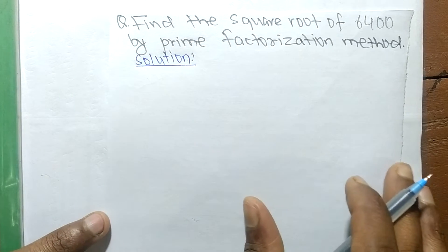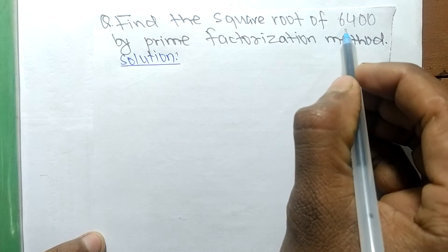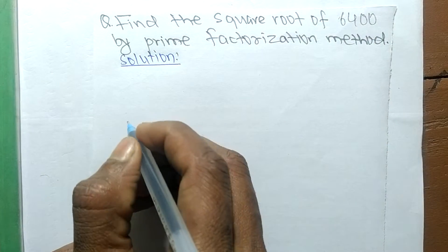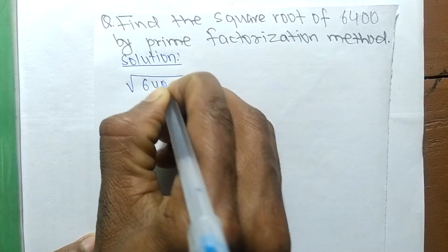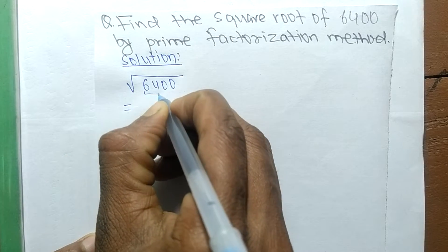Today in this video we shall learn to find the square root of 6400 by prime factorization method. To find the square root of 6400, first you have to find out the prime factors of this number.